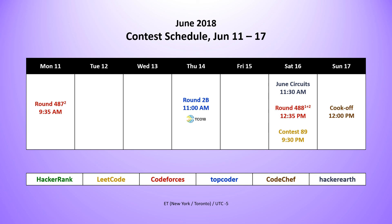Taking a look at the contests taking place next week. We had the Code Forces round 487 for Division 2 this morning. On Thursday, we have the second online round, round 2B from TopCoder for the TCO 18 tournament. So if you didn't qualify in round 2A, this is your second chance. On Saturday, we have the start of the June circuits contest. We also have from Code Forces round 488 for Division 1 and 2. And of course, we have the weekly LeetCode contest 89 in the evening. And finally, finishing off the week from Code Chef, we have the June cook-off at noon on Sunday.